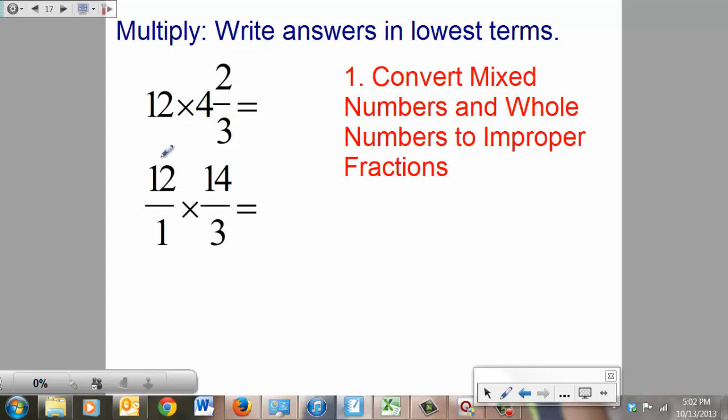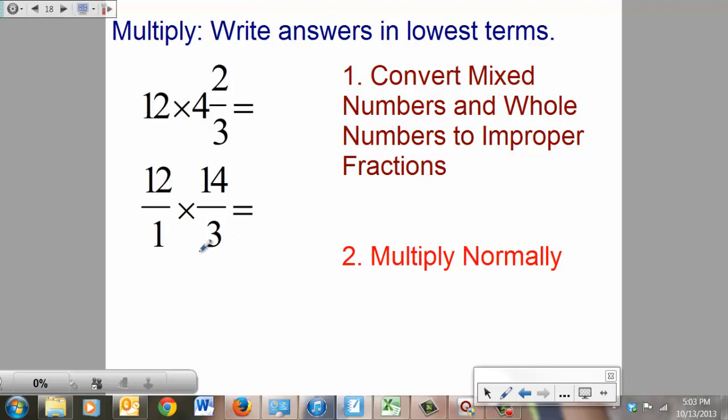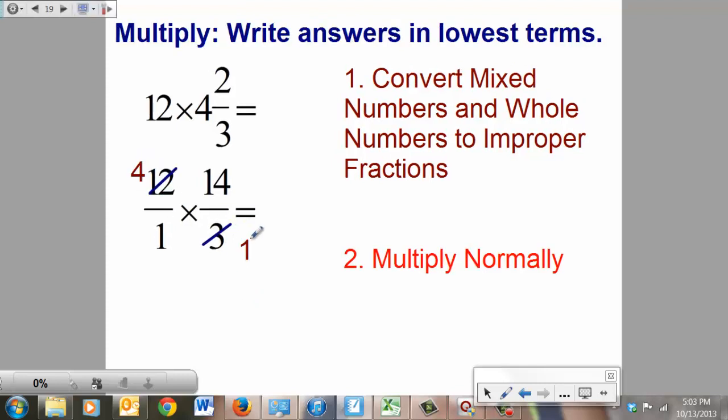So we do that. The 12 became 12 over 1. Over here we did 3 times 4 is 12, plus 2 is 14, which gave me 14/3. Simplify before you multiply. Well, the 12 and the 3, that's obvious. That's going to go. Which means we're going to simplify those, become a 4 and a 1.